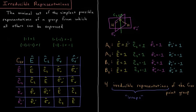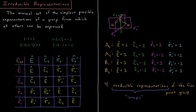That's not the only way to do it. We could also define E=1, C2=1, σv=−1, and σv'=−1. For example, σv×C2 = (−1)×1 = −1, which must equal σv', which is also −1. These definitions are also consistent with the group multiplication table, and this is called the A2 representation of the operators in the C2v point group.